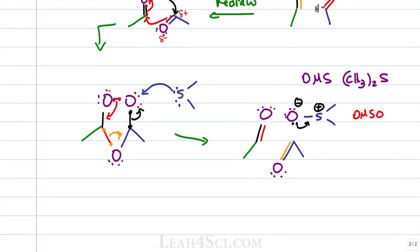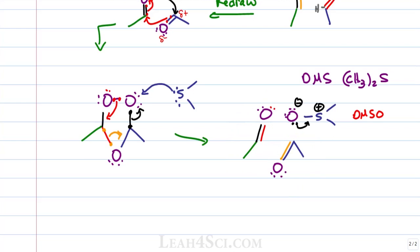Our final products are two aldehydes — one from the green carbon chain and one from the blue carbon chain — which we can redraw cleanly to confirm.